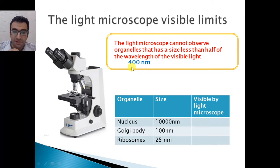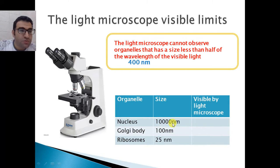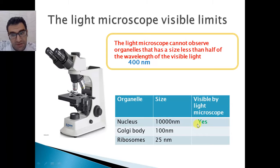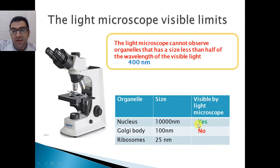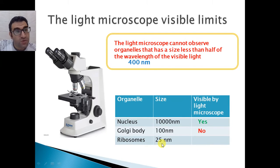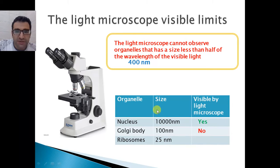Looking at this table as an example: the nucleus has a size of 10,000 nanometers, which is greater than 200, so it can be visualized by the light microscope. The Golgi body has a size of 100 nanometers — when we talk about size, I mean the diameter — and 100 nanometers is less than 200, so it cannot be seen by the light microscope. The ribosomes are 20 to 25 nanometers, which is far less than 200 nanometers, so they cannot be seen under the light microscope either.